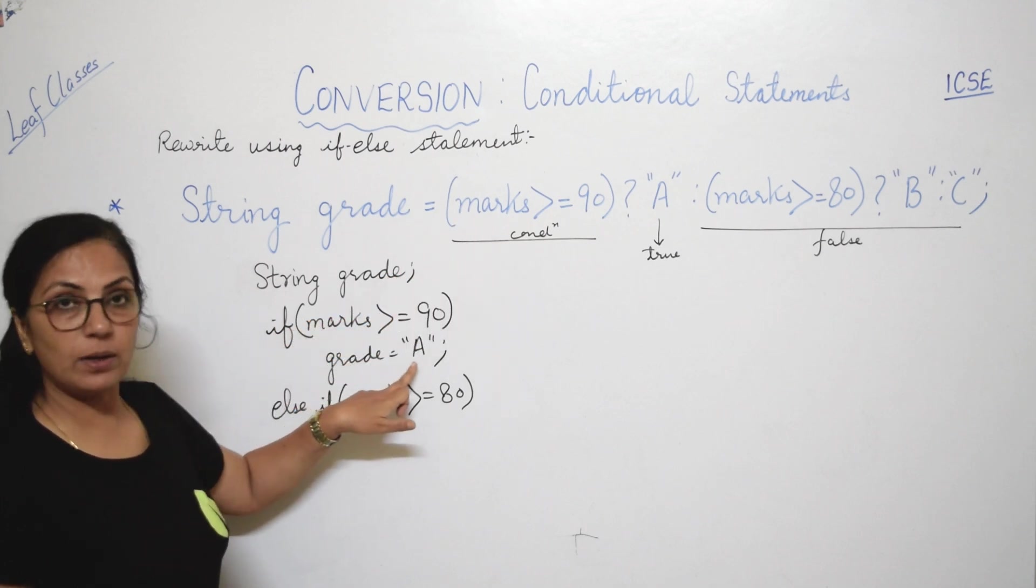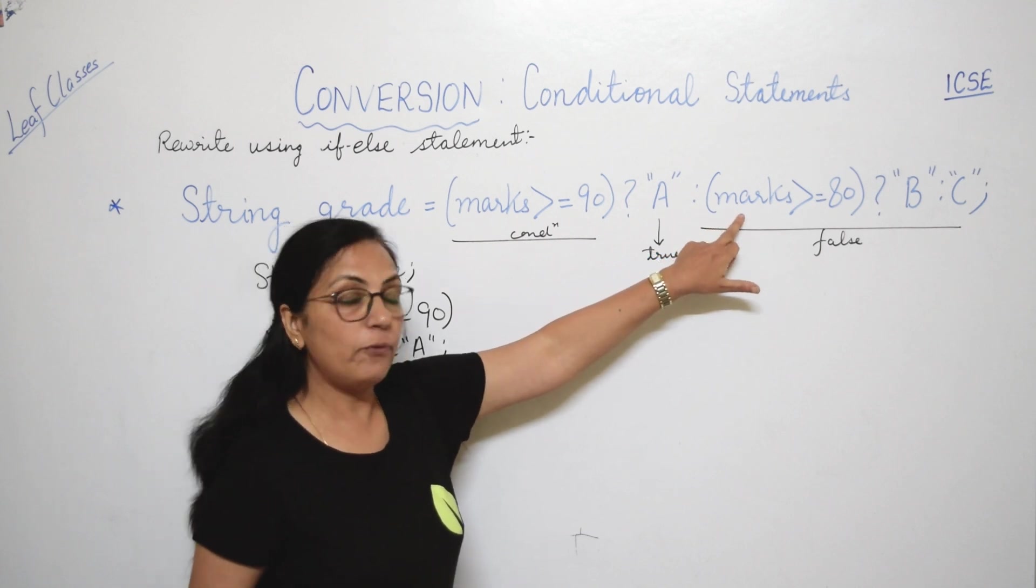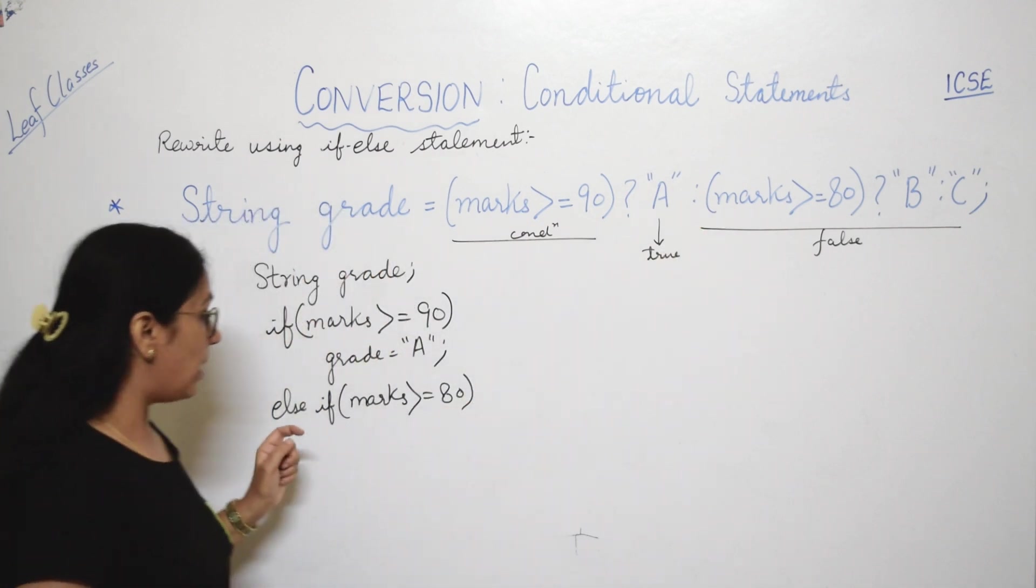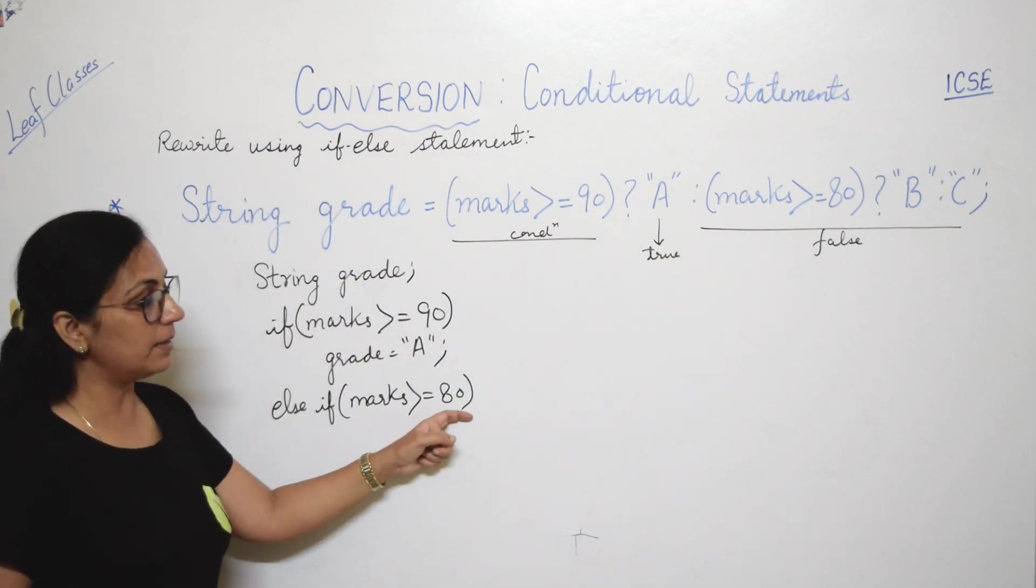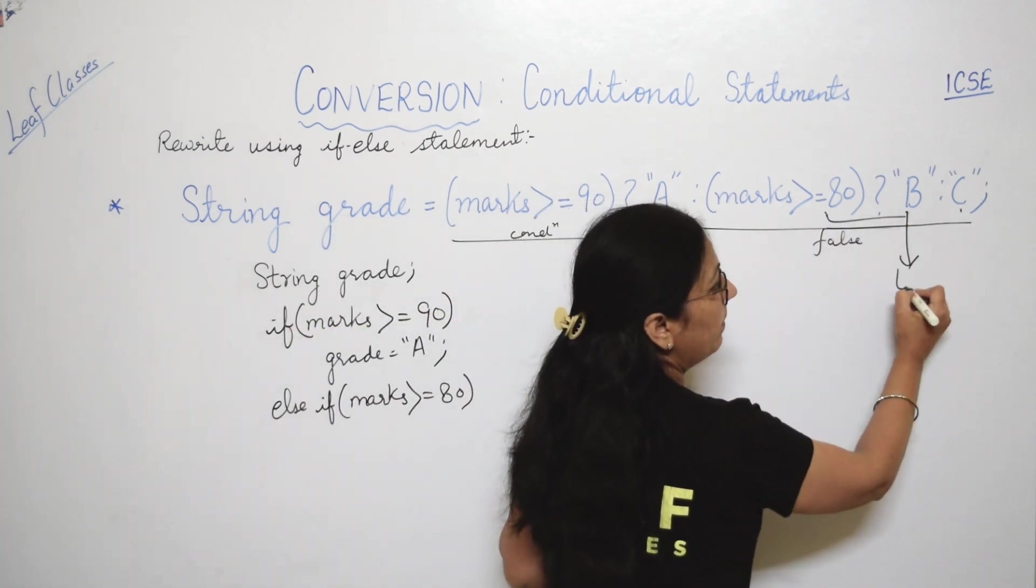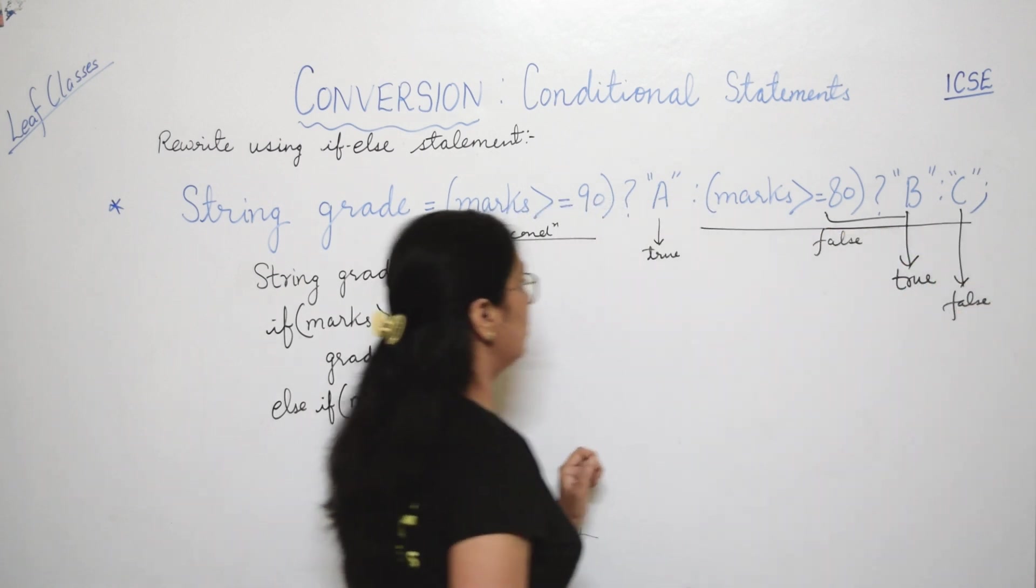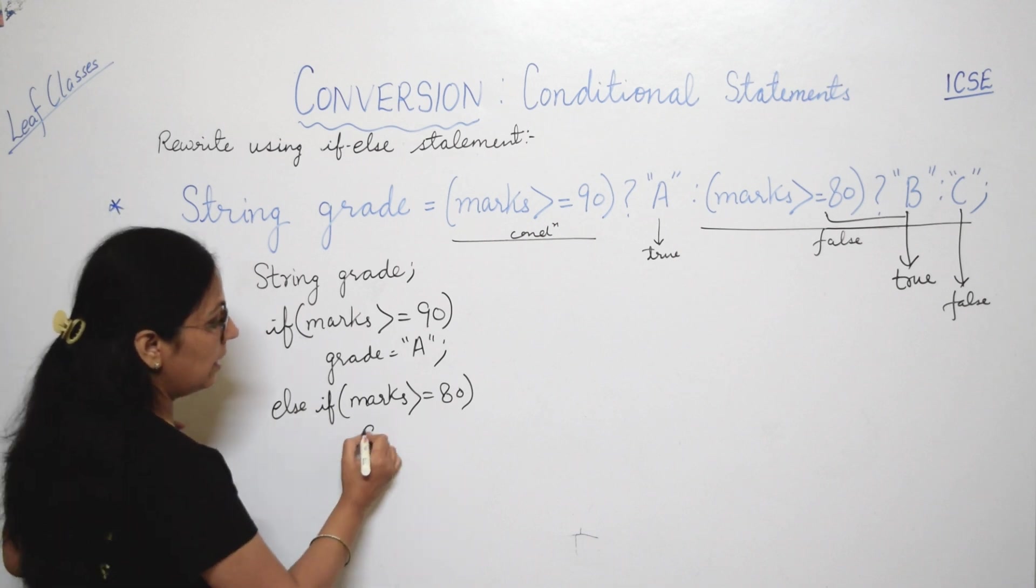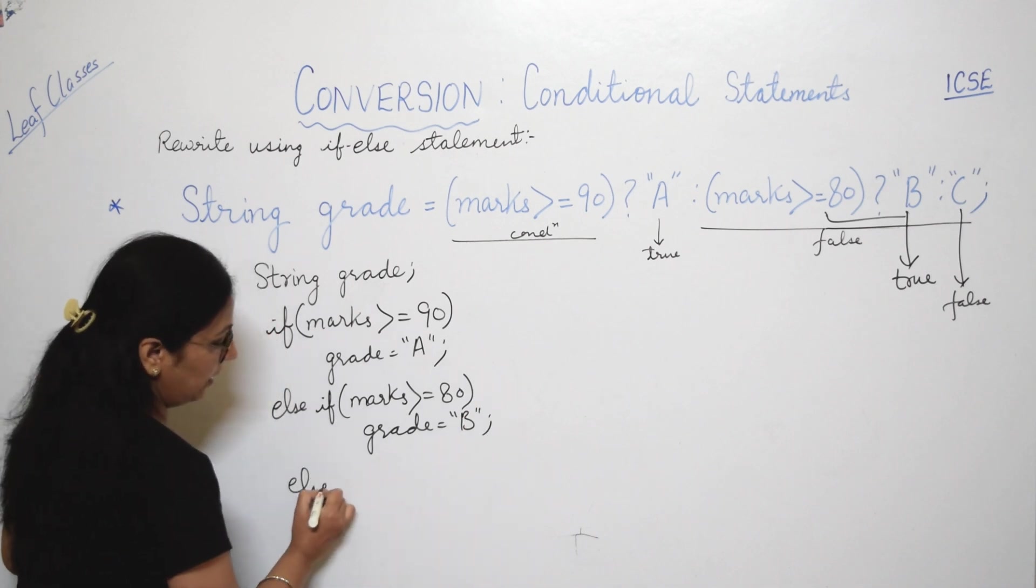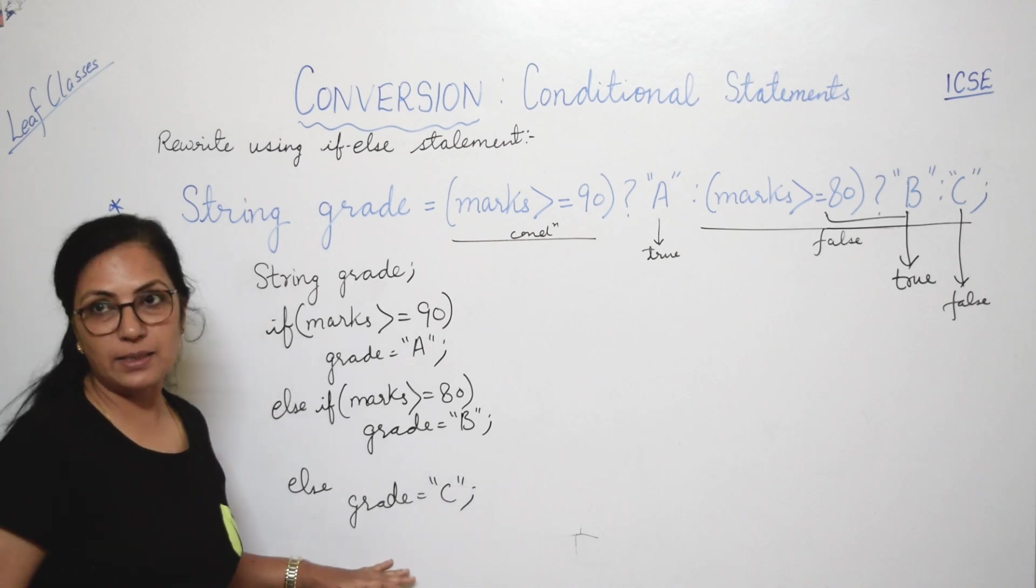Again please I am explaining, I am explaining, please look here. Agar yeh condition true hai, toh grade ki value ho gayi hai A. Aur agar yeh condition false hai, toh phir check hoga ki marks ki value greater than equals to 80 hai ki nahi hai. So agar yeh condition false hai, then again we are checking if marks is greater than equals to 80. So if this is true now, then this will be assigned. Aur agar yeh condition false ho gayi, toh yeh assign hoga, right? Toh hum ne yahaan pe kya kiya? If marks greater than equals to 80, grade is equals to B. Else, grade is equals to C. Children, please practice these type of questions, right?